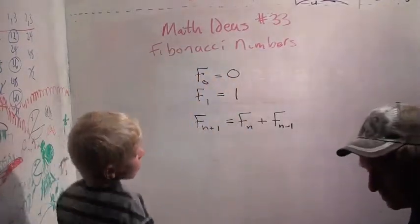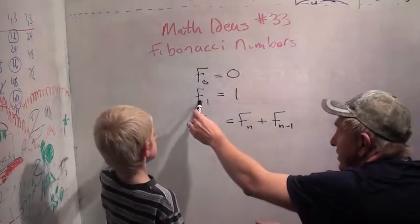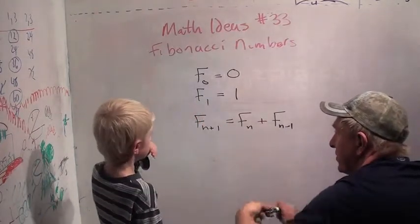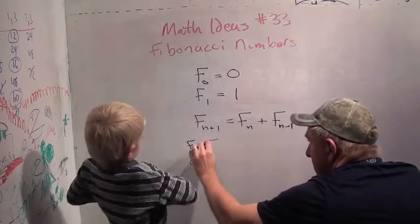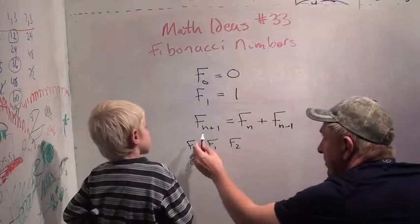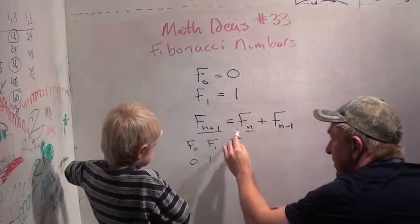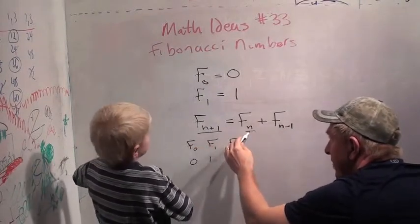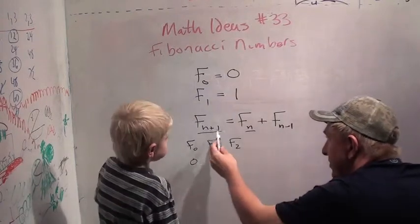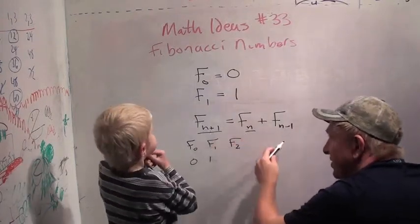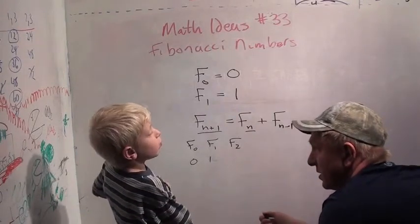So, F sub zero is zero, means you just start at zero. F sub one is one, means this number is one. So, we start F sub zero is zero, F sub one is one. And F sub two, if this is two, then this says F two equals F one plus F zero. Okay? F two is F one plus F zero. So, what is F one plus F zero? One plus zero is one.